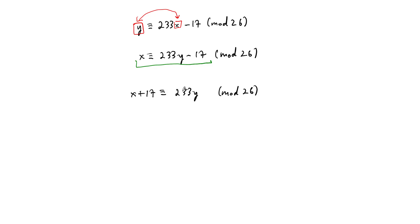And now what we need to do is get rid of this 233. So the 233, remember, there's no division. But the 233, first of all, can be reduced mod 26, and then we can try to find its inverse mod 26.